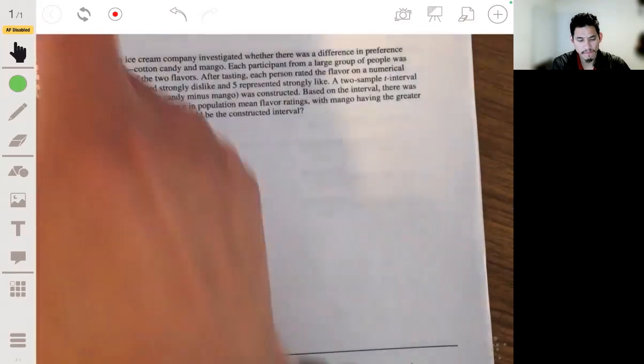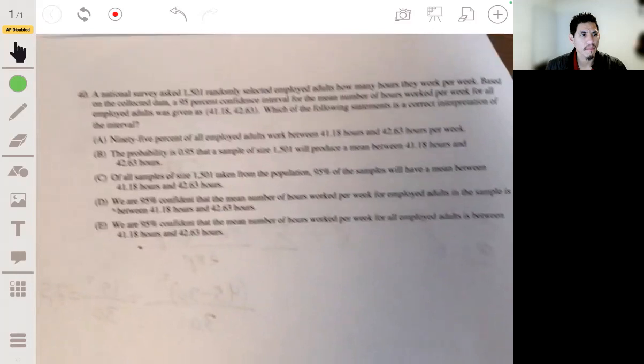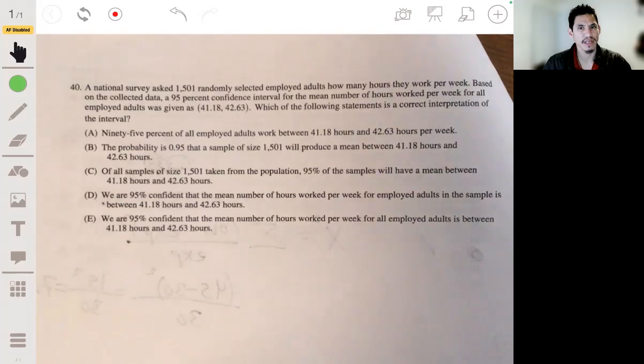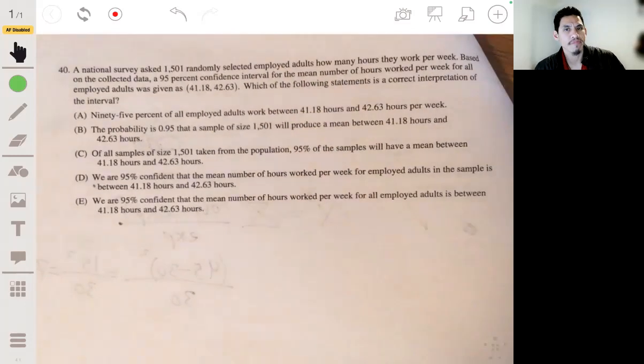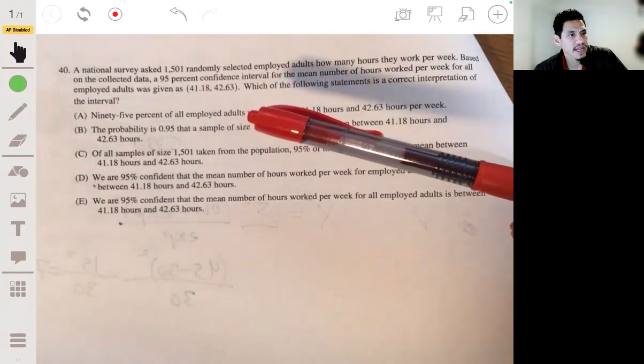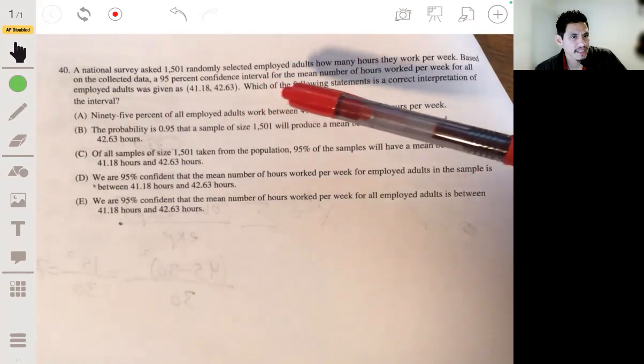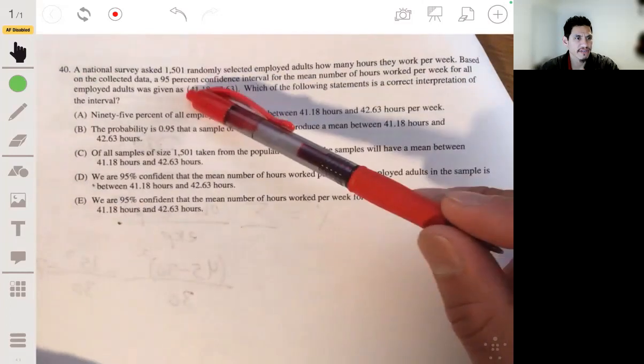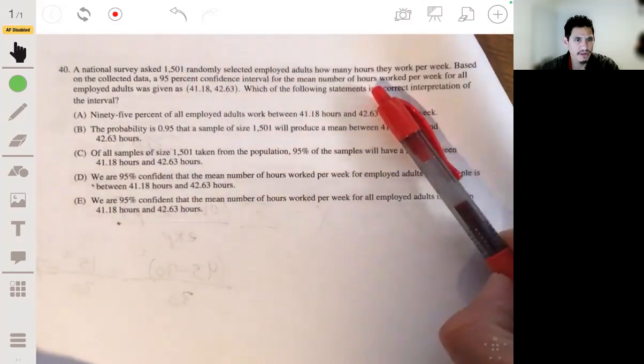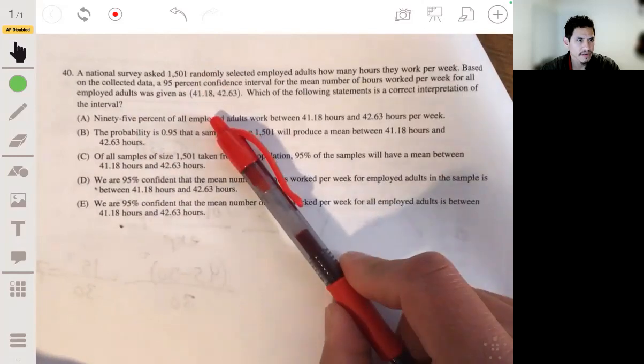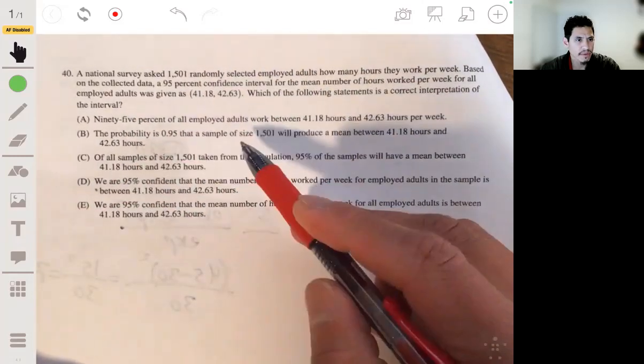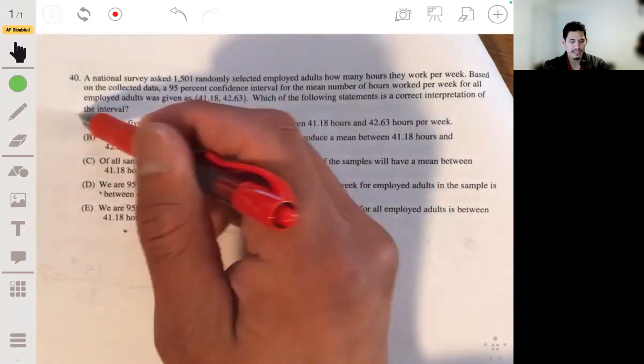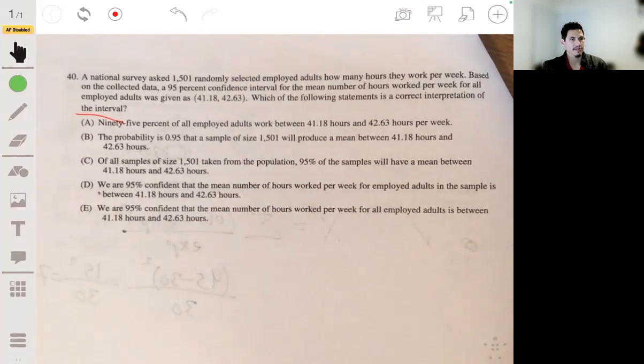Oh, this one is easy. Well, yeah. It's easy. It's nice for the end. You can end this confident. All right, so here we got a national survey. Asked 1,501 randomly selected employed adults how many hours they worked per week. Based on the collected data a 95% confidence interval for the mean number of hours worked per week for all employed adults was given as 41.18 to 42.63. Which of the following statements is the correct interpretation of the interval?